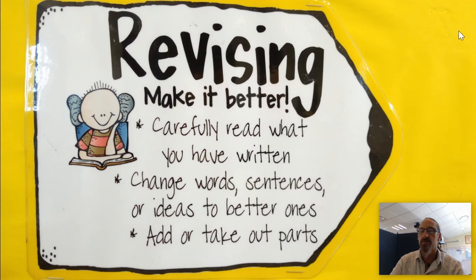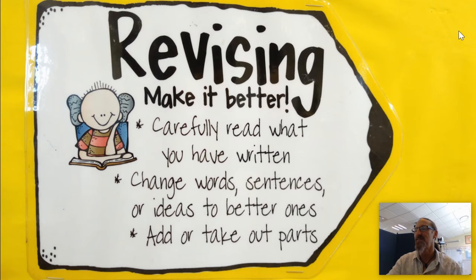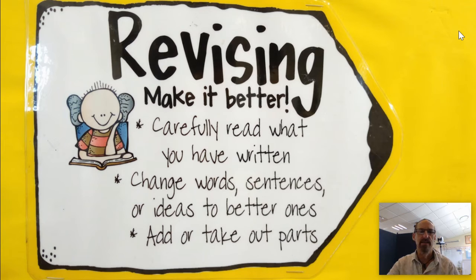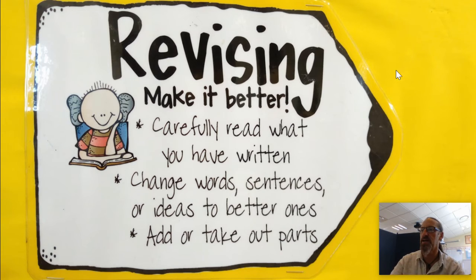Then revising — making it better. Carefully read what you've written, maybe ordering it correctly if you've made a big mess. Change words to make it more interesting or to make your language more technical. Change sentences — maybe some of it is very samey and you want to vary the type of sentence. Getting different ideas in there, adding things, taking things out. This is revising — it's almost like a second draft, revising your initial draft and making a second draft.